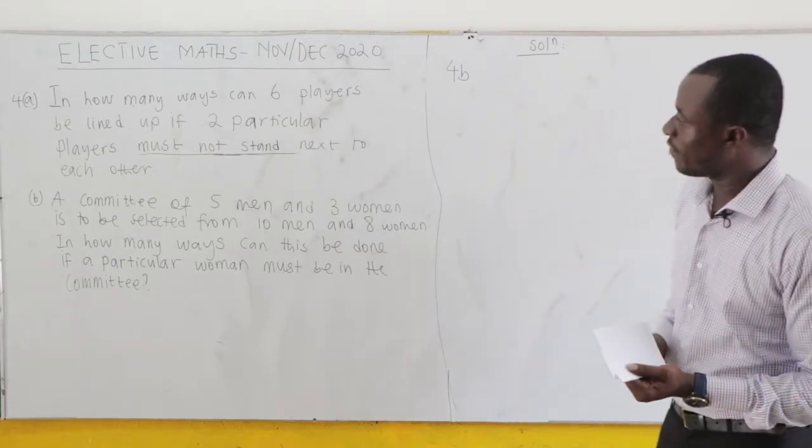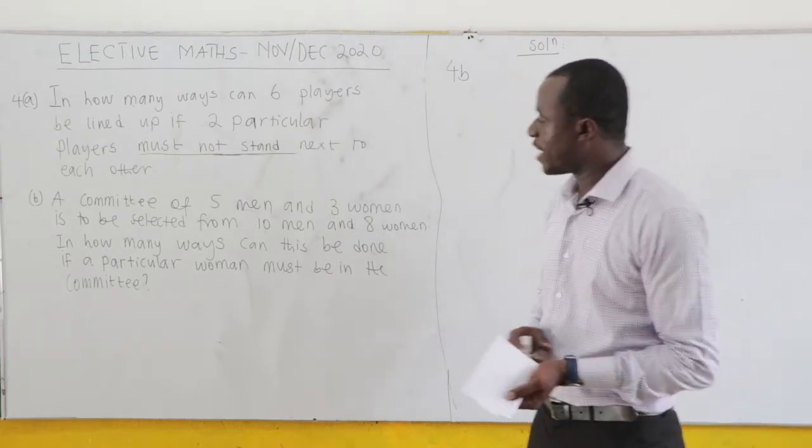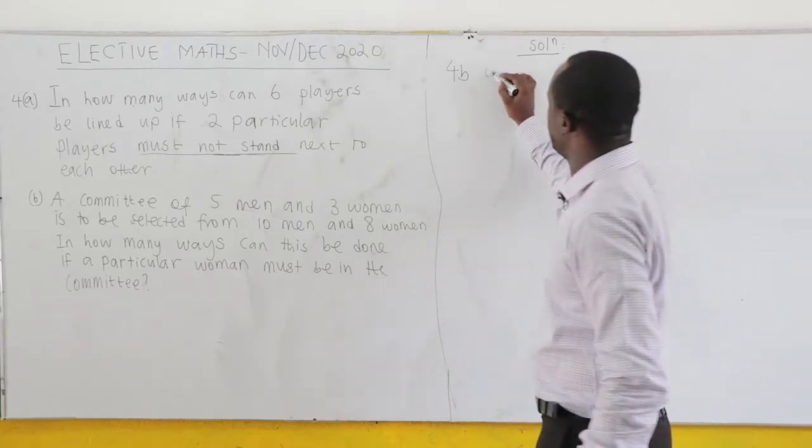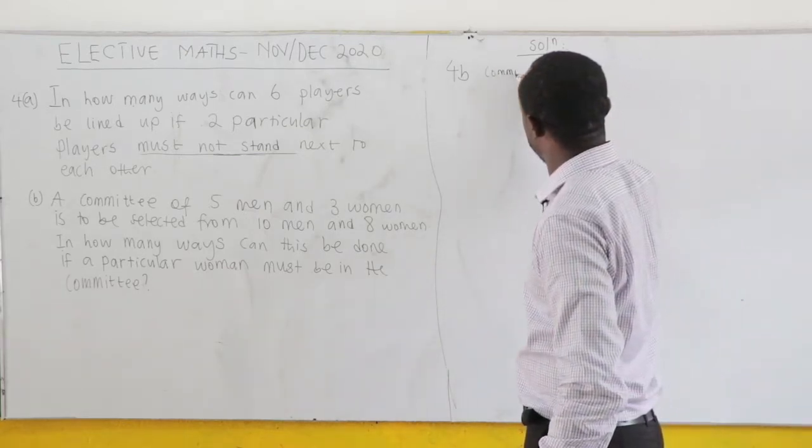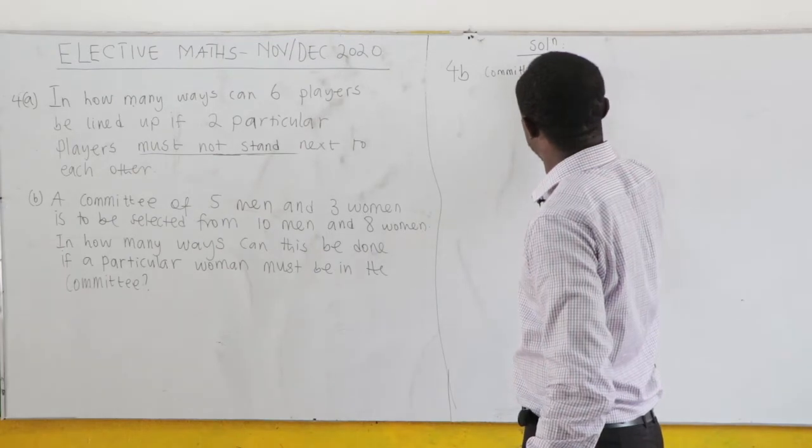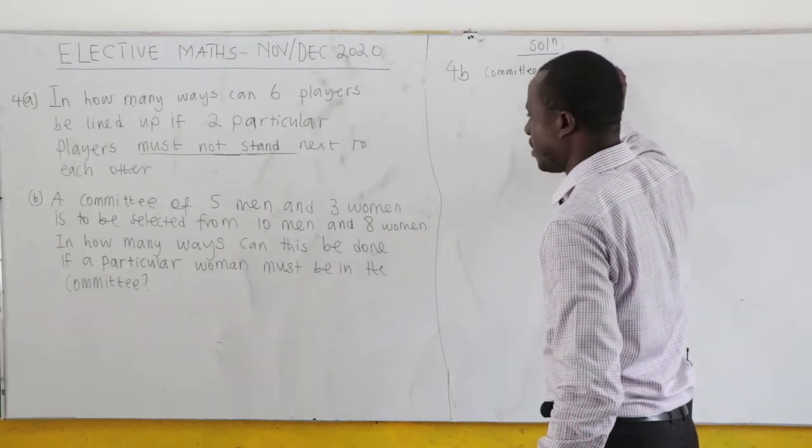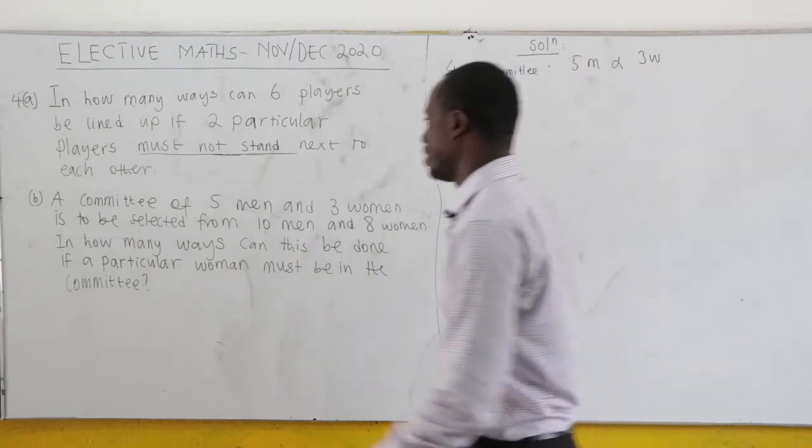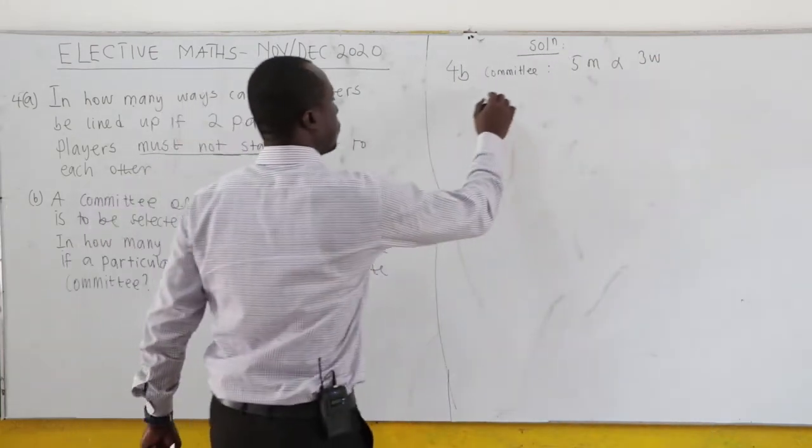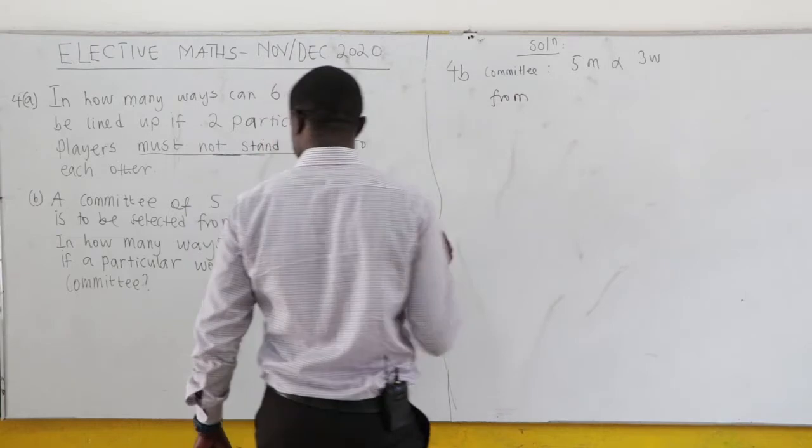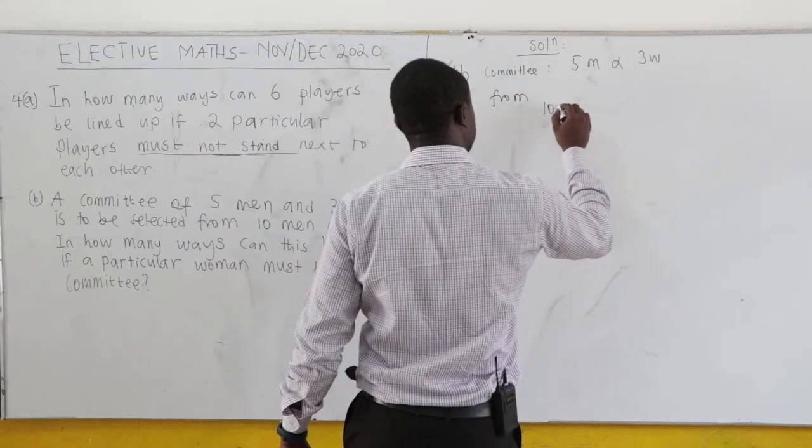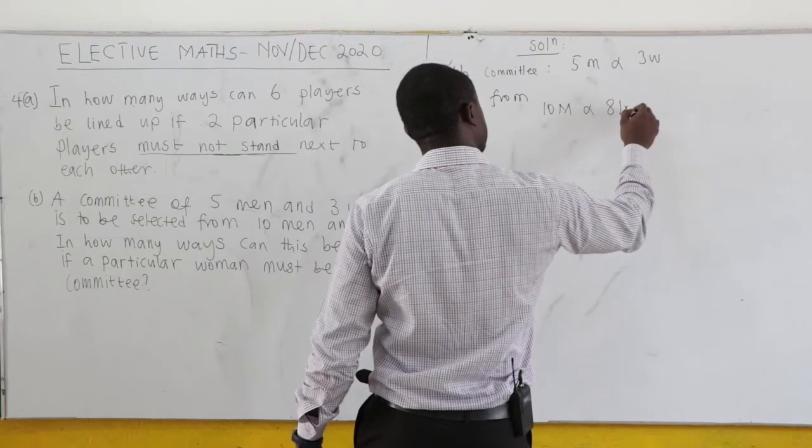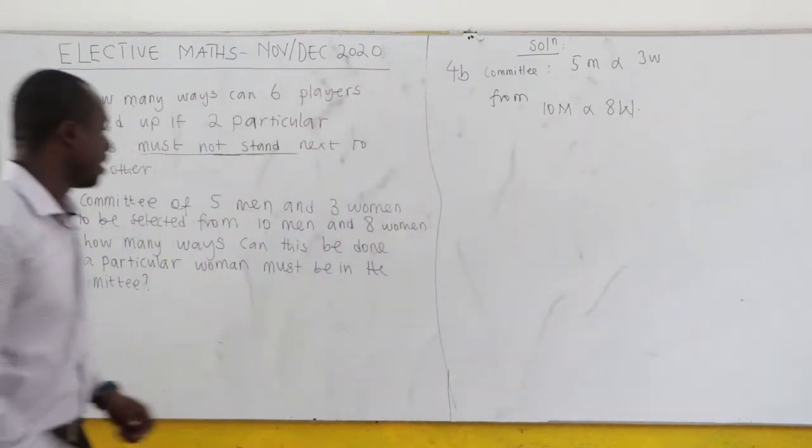November/December 2020, question number 4B. A committee of 5 men and 3 women is to be selected. So the committee should consist of 5 men and 3 women to be formed from 10 men and 8 women.